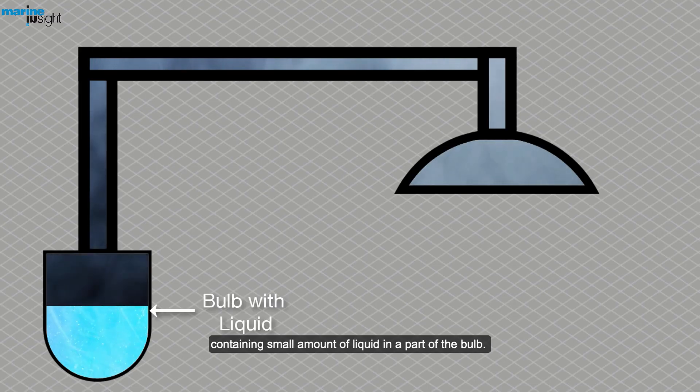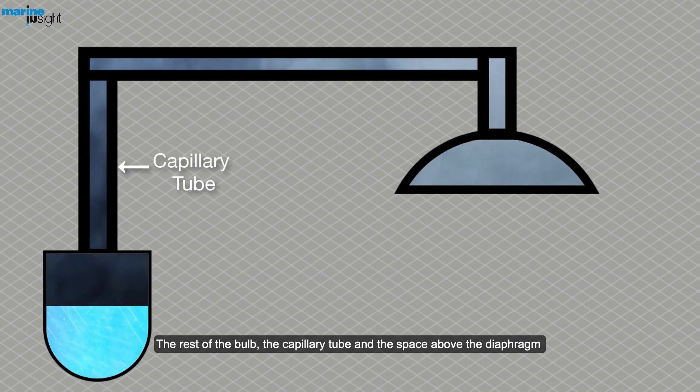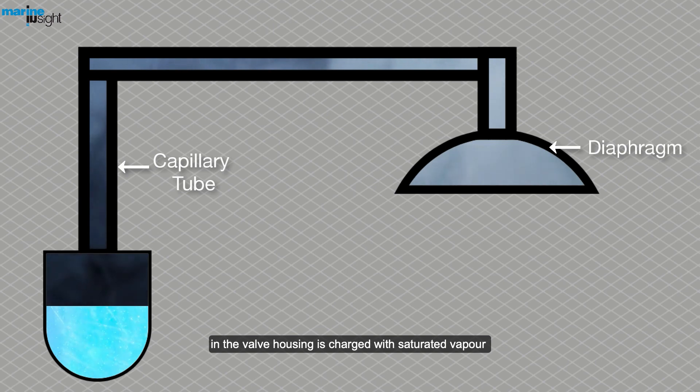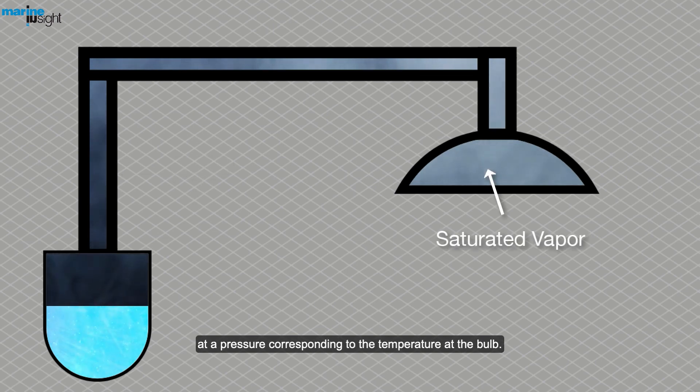The rest of the bulb, the capillary tube and the space above the diaphragm in the valve housing is charged with saturated vapor at a pressure corresponding to the temperature at the bulb.